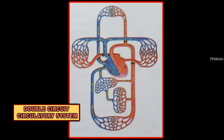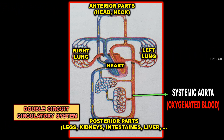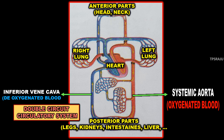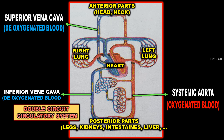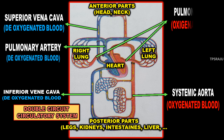This is the double circuit circulatory system present in the textbook. Let us label the parts: Systemic aorta, inferior vena cava, superior vena cava, pulmonary artery and pulmonary veins.